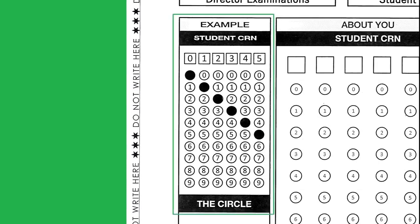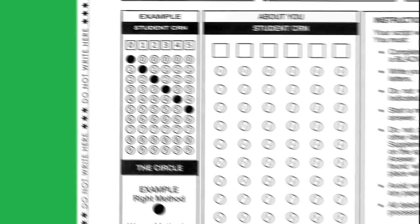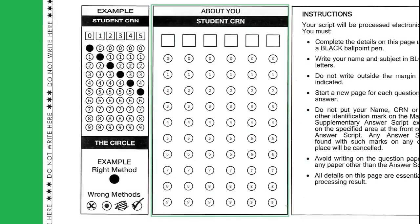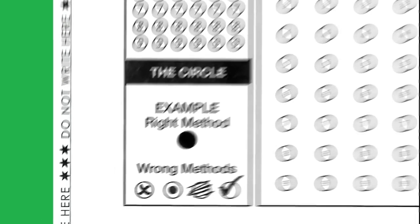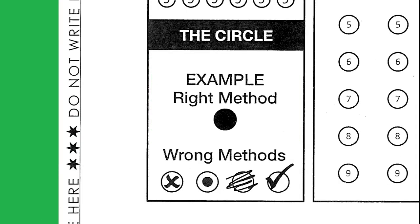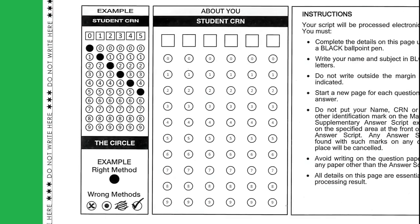Below the signature boxes on the left side you will see examples showing how the CRN is to be filled. Adjacent to the example box you will see a large rectangular box in which you should write your CRN and shade the relevant circle in the same manner as mentioned in the example. Now I am demonstrating this, which will help you understand the correct method of writing the CRN and shading the correct circle.